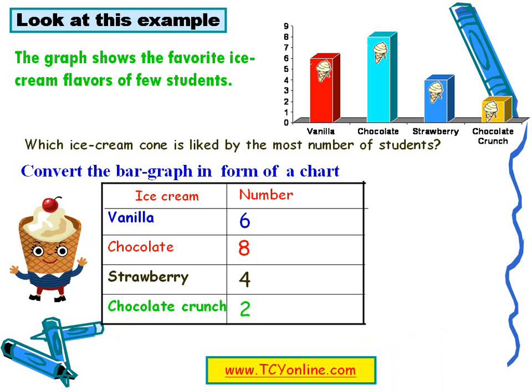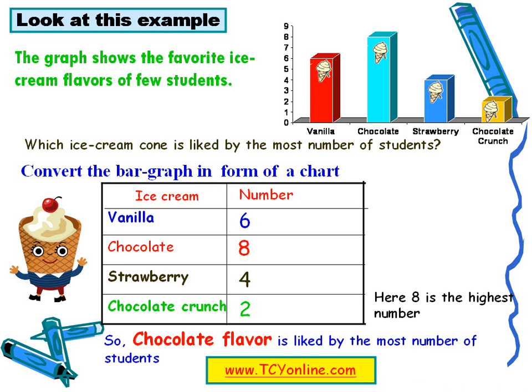The vanilla bar goes till 6, so 6 students like vanilla flavored ice cream. The chocolate bar goes till 8, so 8 students like chocolate flavored ice cream. The strawberry bar goes till 4, so strawberry flavored ice cream is liked by 4 students. The chocolate crunch bar goes till 2, so chocolate crunch flavored ice cream is liked by 2 students. Since 8 is the highest number, chocolate flavored ice cream is liked by the most number of students.